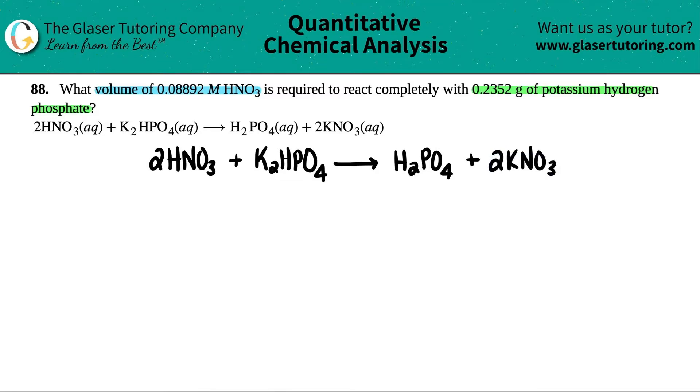Next thing I'm going to do, I crack myself up sometimes. Anyway, the next thing we're going to do is we're going to write down the givens. They told us that we have 0.2352 grams of potassium hydrogen phosphate. So I just got to find out which one of these four is potassium hydrogen phosphate. It's this one. Potassium K hydrogen H phosphate PO4. So I have 0.2352 grams of this.